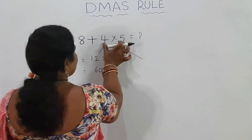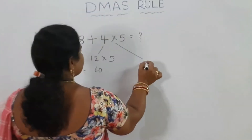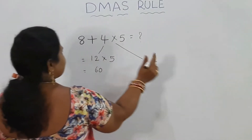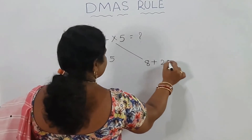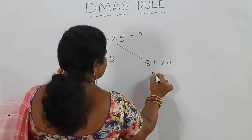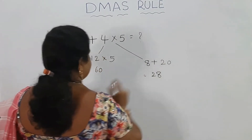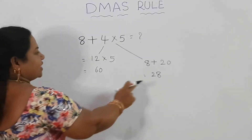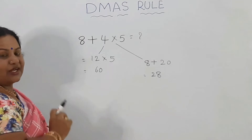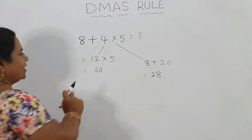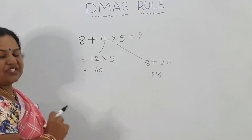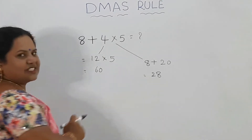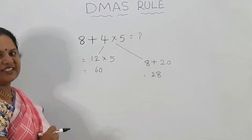First, 4 into 5 is equal to 20. So 8 plus 20 equals 28. Here is 60, here is 28 — two different answers. Which one is correct? Is it 60 or is it 28?